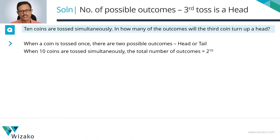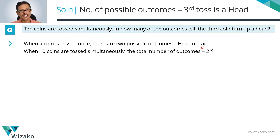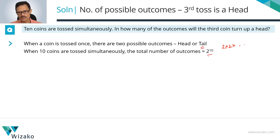When you toss a coin, there are two possible outcomes — it could turn out to be a head or a tail. Each of the 10 coins will actually have two such outcomes. So you'll have two outcomes for the first one, two for the second, two for the third, and so on up to the 10th coin. So the total number of outcomes will be 2 times 2 times 2, multiplied 10 times over, giving us 2 raised to the power of 10.